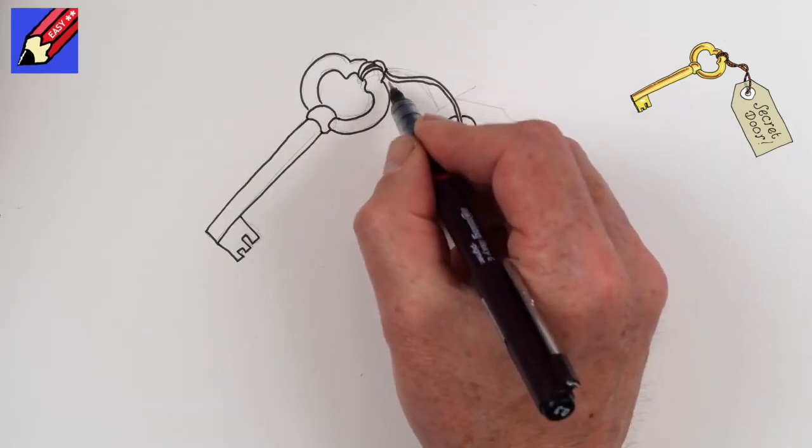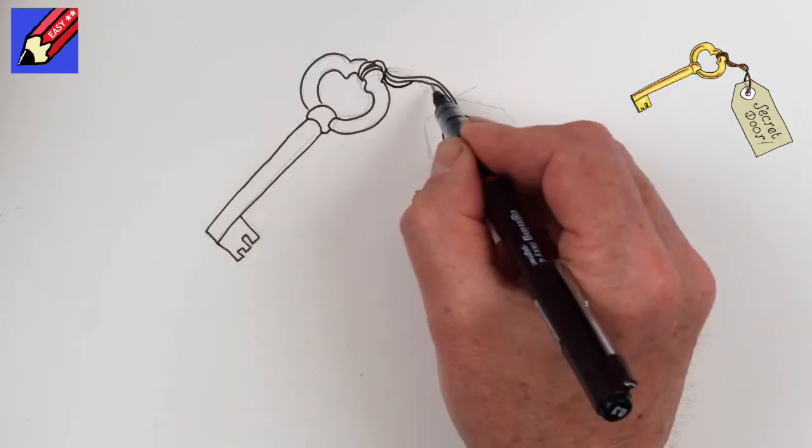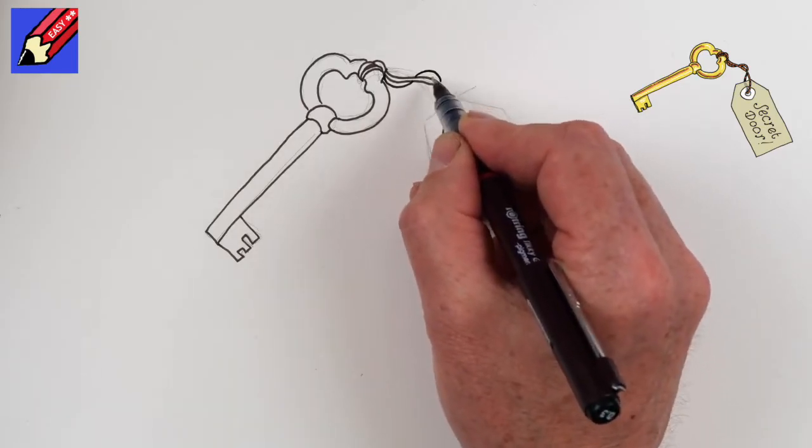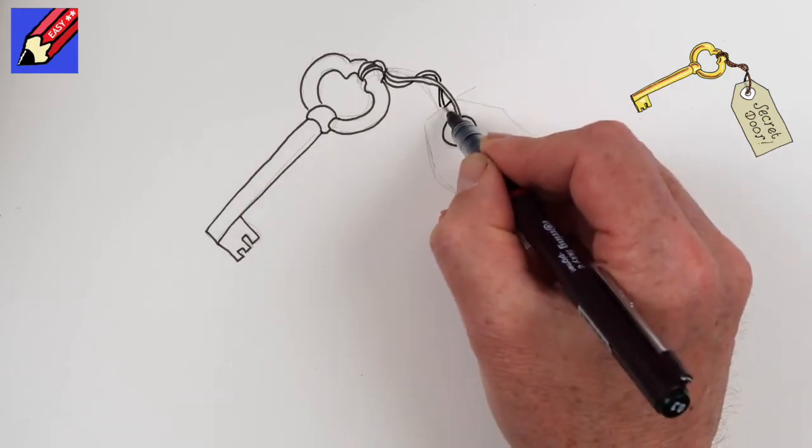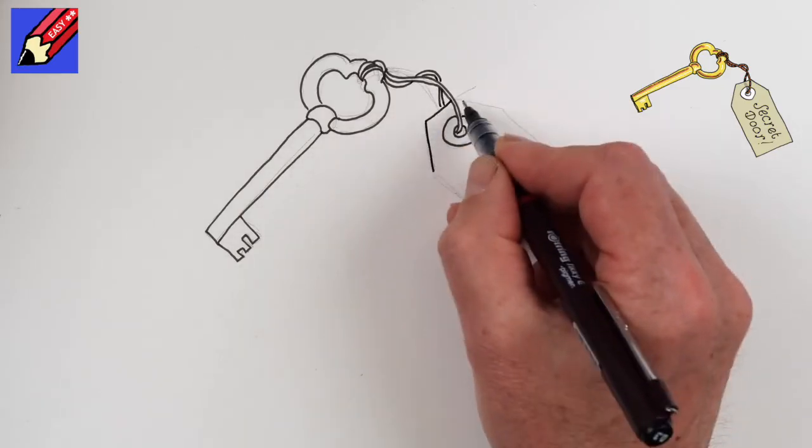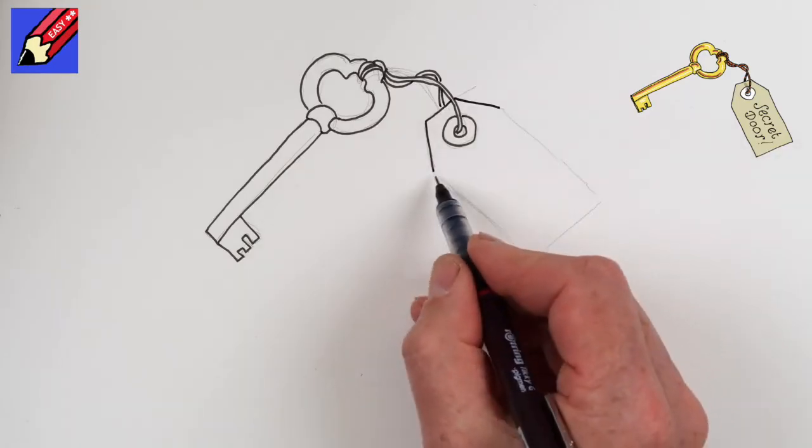Then that one is going to come around like that—maybe behind, it's got to go behind it like that. Then we can draw the label.